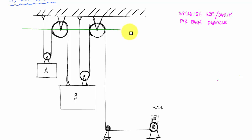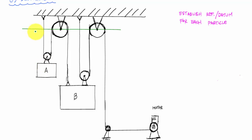For particle A, I'll use a line through the centers of the two pulleys as my reference. Block A includes the entire block plus the little pulley wheel attached to it. Since they move together, I'll choose the middle of the block to represent the distance from the origin. I'll define motion away from the reference as positive, calling this distance plus s_A.